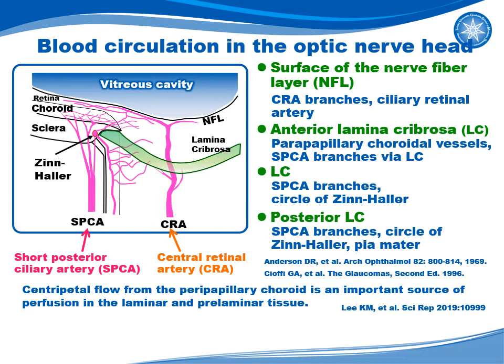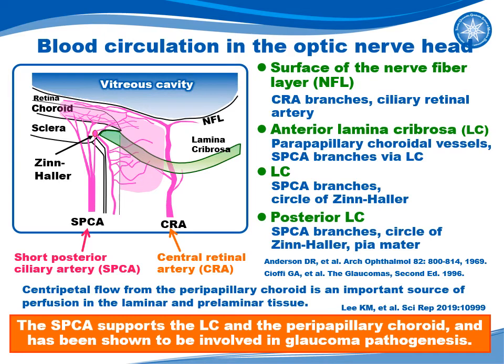This figure shows a schematic diagram of vasculature innervation of the optic nerve head. The surface of the retina NFL is supported by branches of the central retinal artery, and the deep area of the optic nerve is supported by short posterior ciliary arteries. Recently, centripetal flow from the peripapillary choroid has been identified as an important source of laminar and prelaminar tissue perfusion. SPCA supports the lamina cribrosa and the peripapillary choroid, and has been demonstrated to be involved in glaucoma pathogenesis.